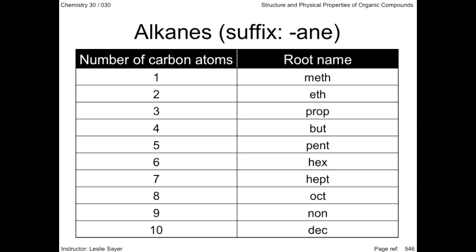There are some rules for naming hydrocarbons. They get more complicated as we proceed through this unit, so a solid understanding of the basics is essential at this point. Similar to the naming of molecular compounds, the number of carbon atoms in a single row is identified by the root name. The suffix "-ane" follows the root name, identifying the compound as an alkane.